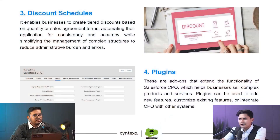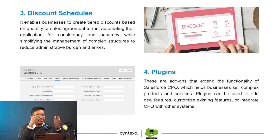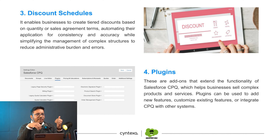Let's talk about discount schedules. Discount schedules are a way of defining discounts on particular products. For example, if somebody is purchasing 10 to 19 products, we can define a rule that they should get a discount of 5%. And if somebody is purchasing in a quantity from 21 to 30, we can define that they should get a discount of 9%. So we can do that with discount schedules.